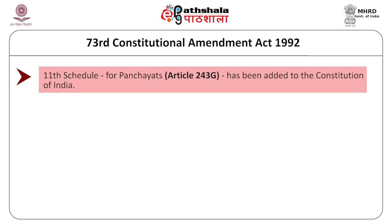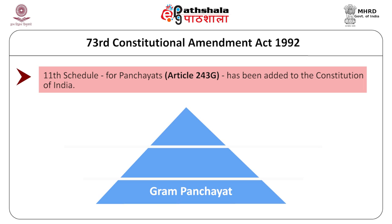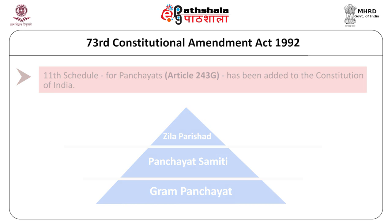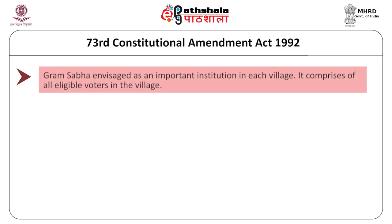Other prominent features include the three-tiered structure with Gram Panchayat at the base, the Panchayat Samiti, and the Zilla Parishad as the other tiers of the rural local bodies. Gram Sabha has been accorded constitutional status under the 73rd Constitutional Amendment Act.